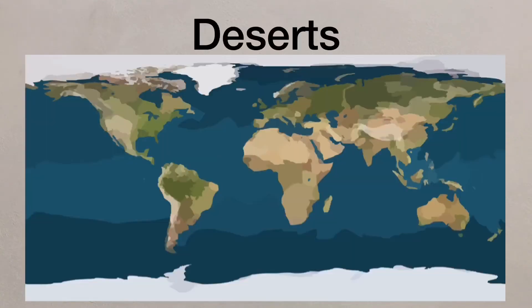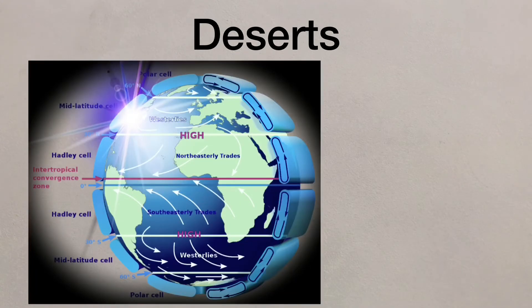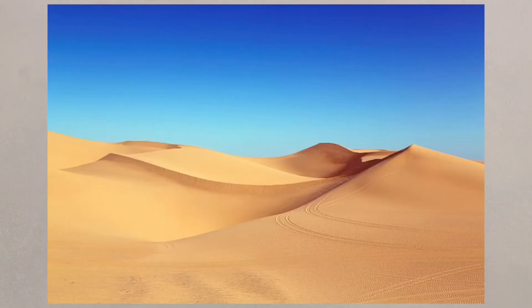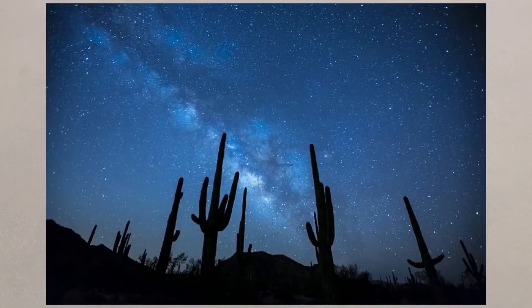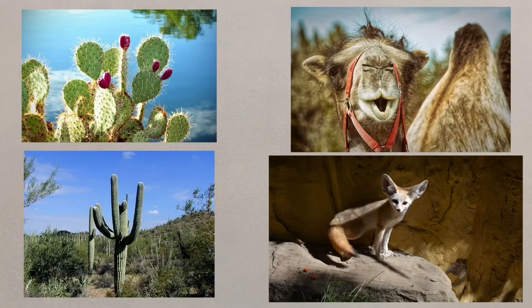Deserts are located around 30 degrees north and south of the equator and cover one-fifth of the world's land surface where we find high pressure belts. Sinking air stops clouds from forming, giving very high temperatures but low nighttime temperatures and little rainfall. Plants and animals have to adapt to survive in these difficult conditions.